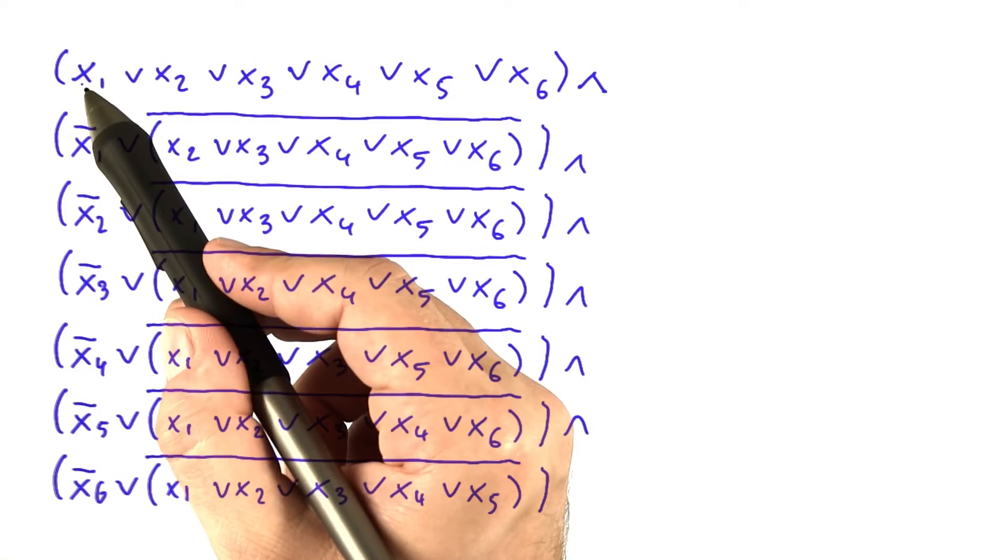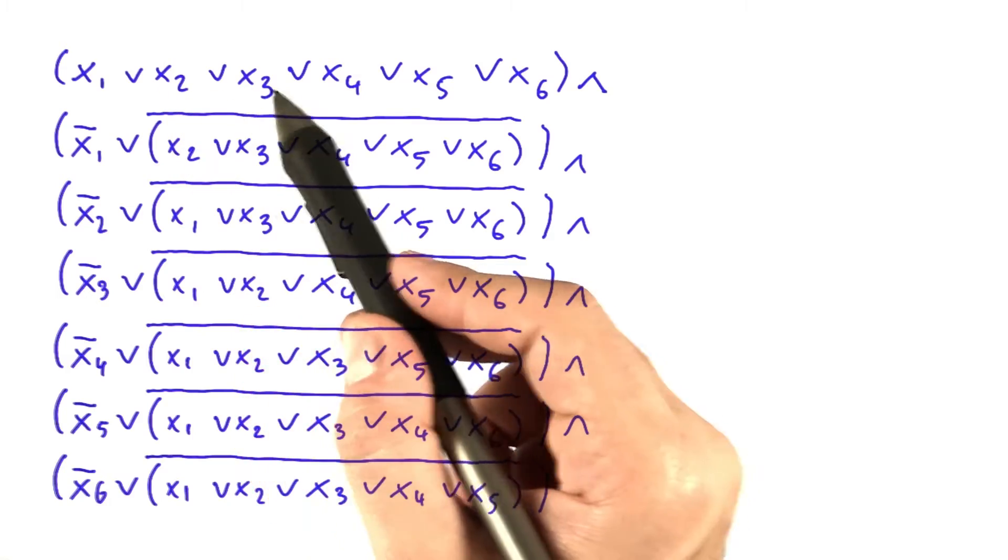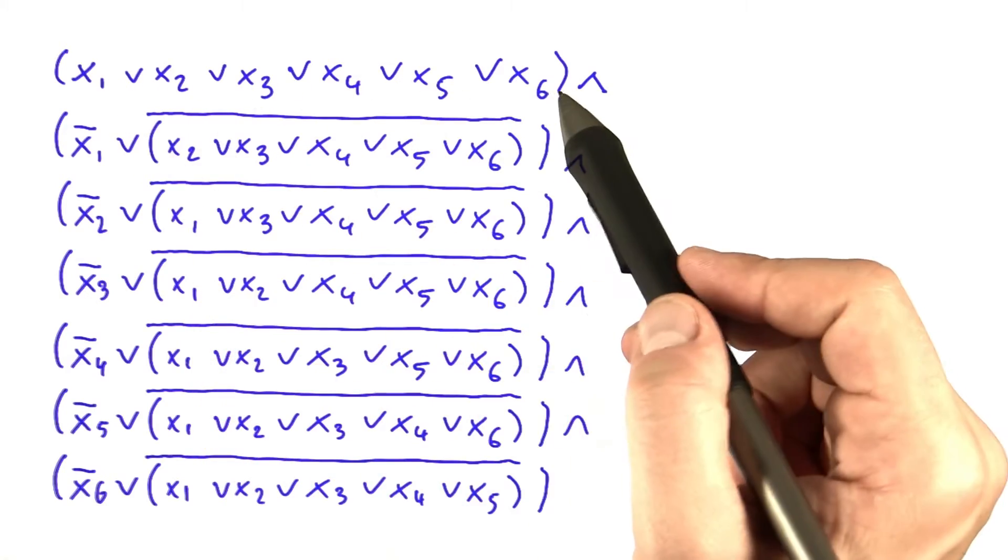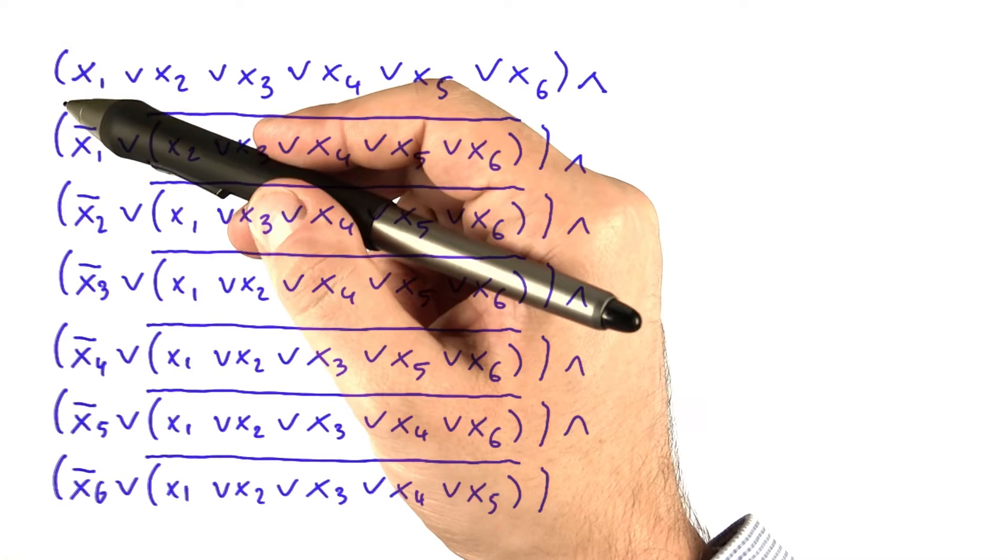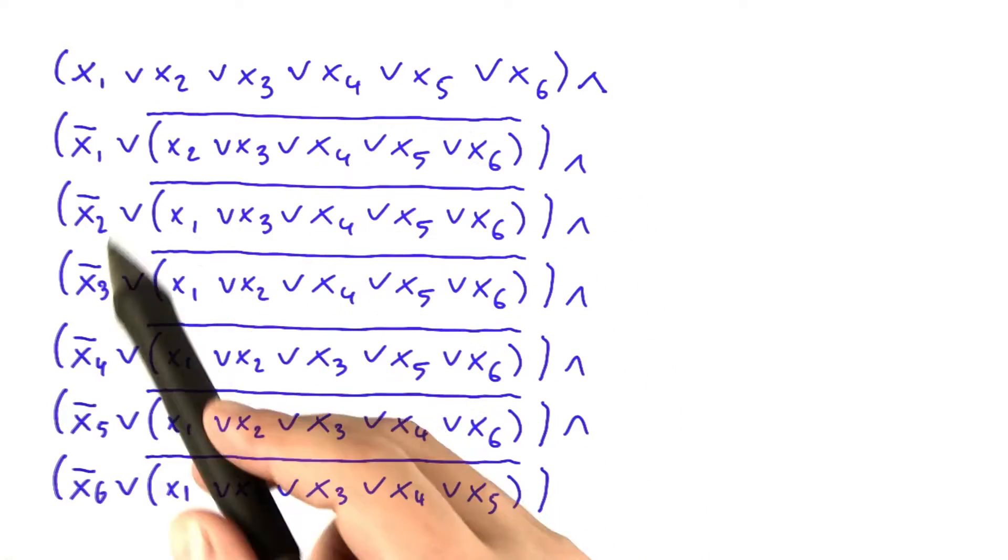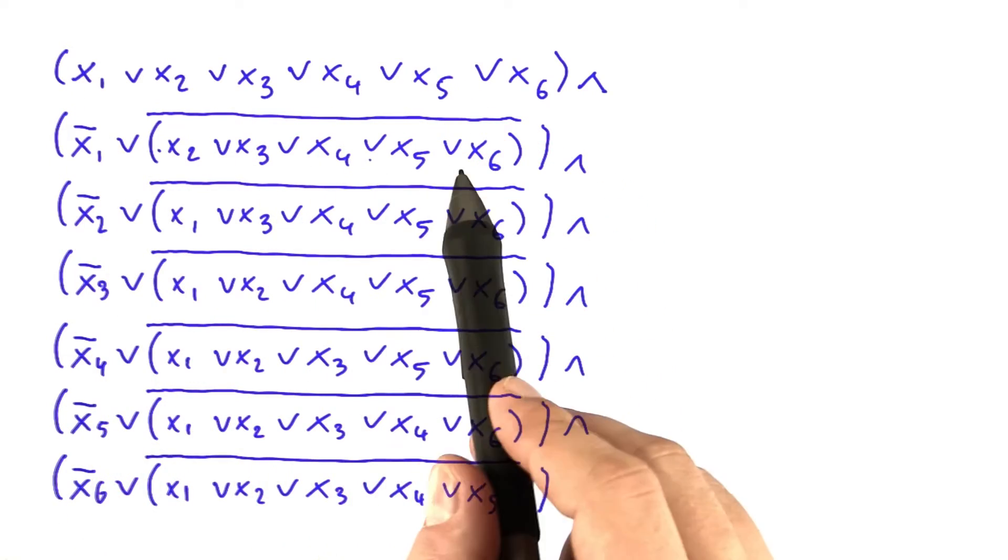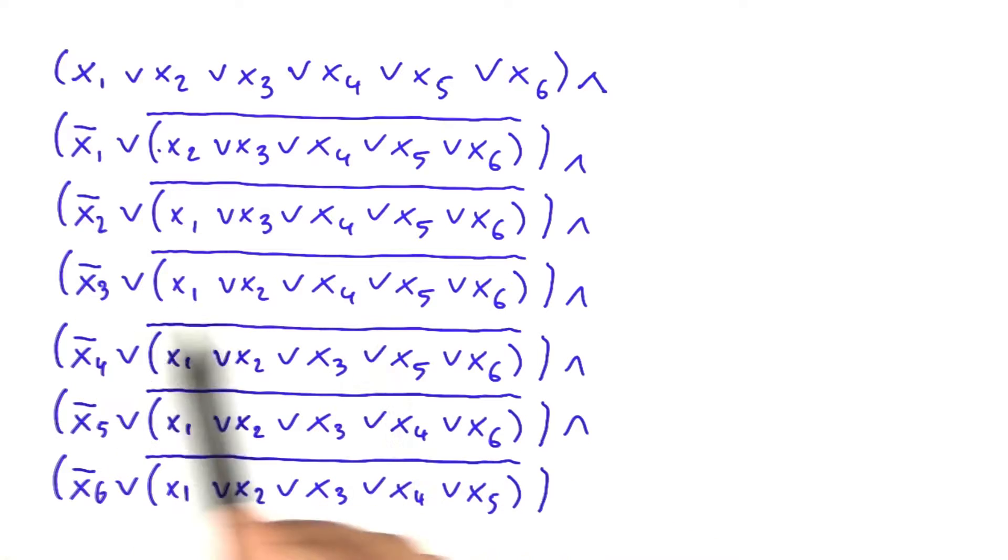So the formula consists of six variables, x1, x2, x3, to x6, and it has seven brackets. So as you can see, each of those brackets contains all of the six variables, x1, x2, x3, x4, x5, x6. Sometimes they're a bit mixed up, but every bracket here contains the six variables exactly once.